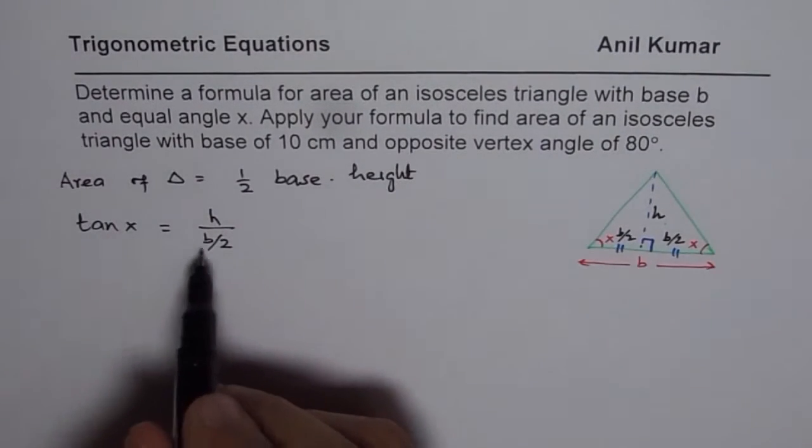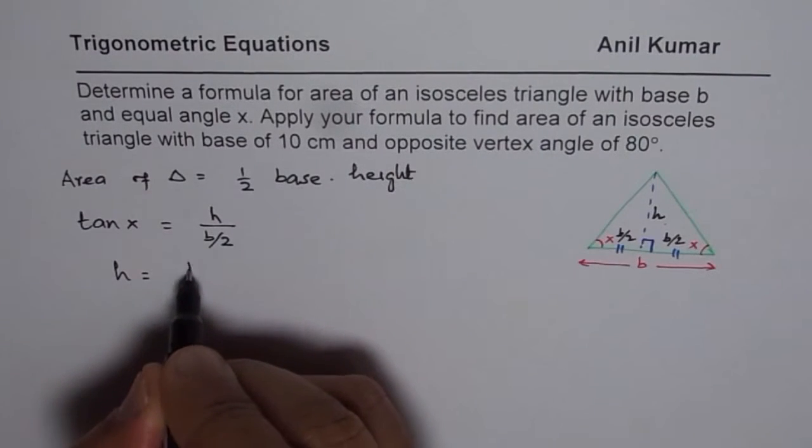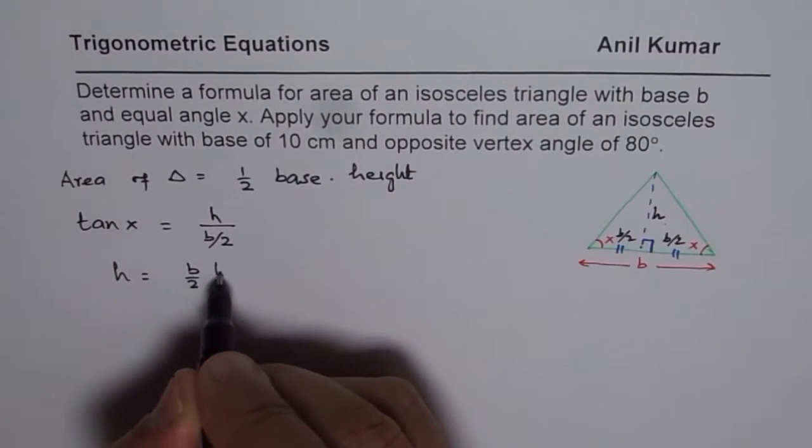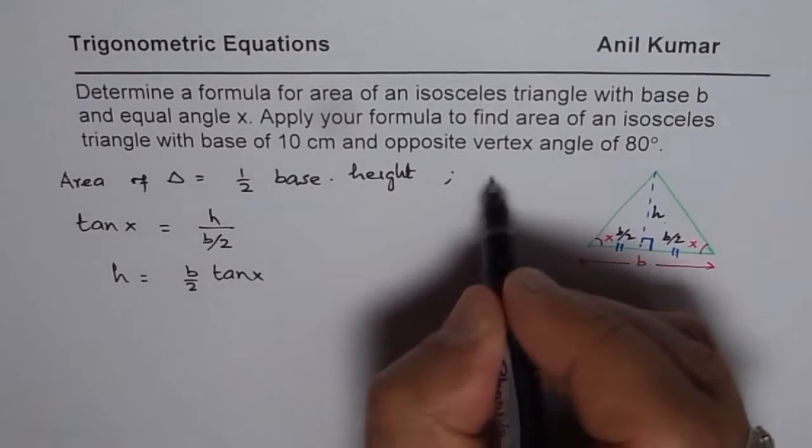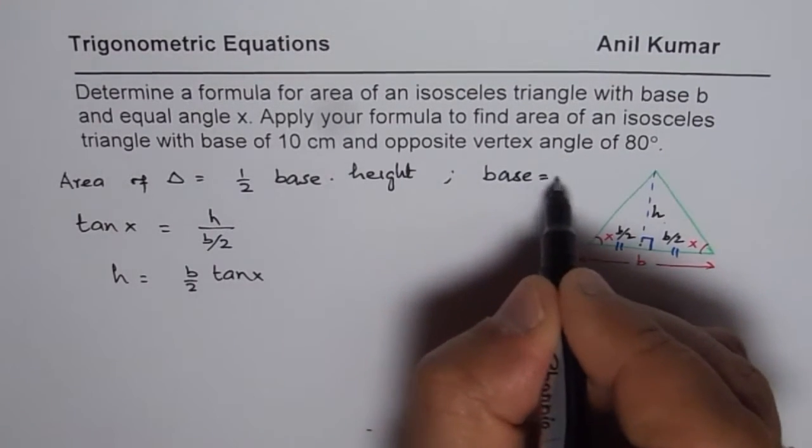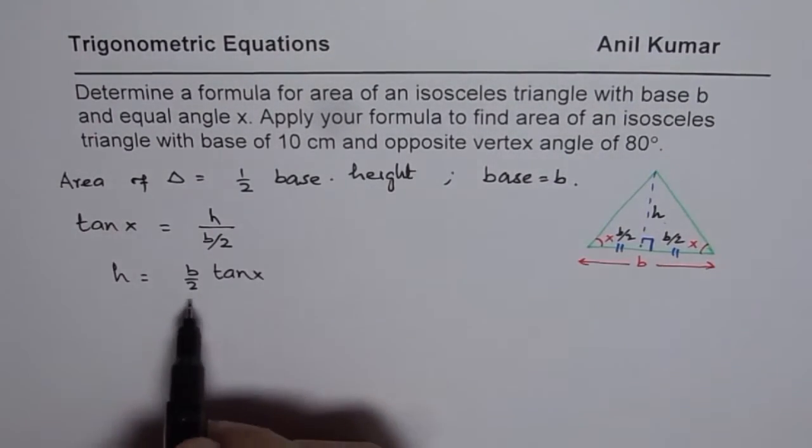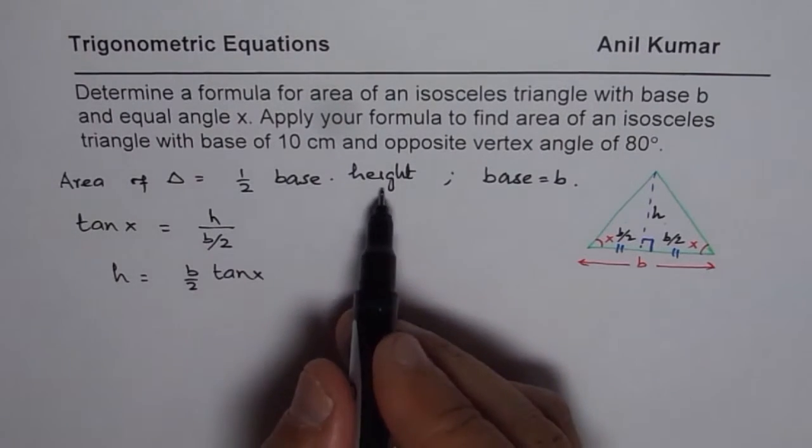We can rearrange this. We say height equals to b by 2 times tan x. So that becomes the height. We know base is b for us. We know base equals to b.